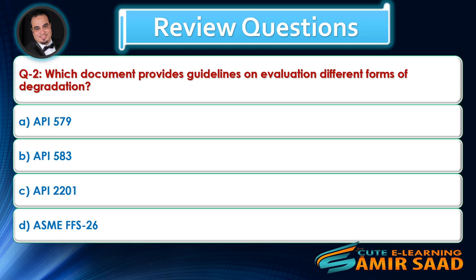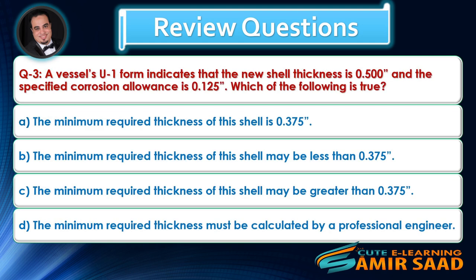Question 2: A vessel's U1 form indicates that the new shell thickness is 0.500, and the specified corrosion allowance is 0.2. Which of the following is true? Answer is B.